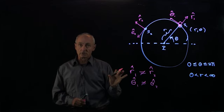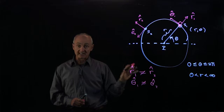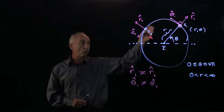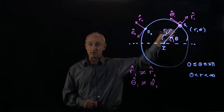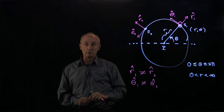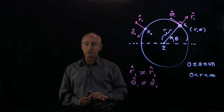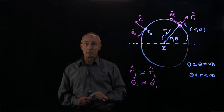So unlike Cartesian coordinates, in which every single point has the same unit vectors, in polar coordinates the unit vectors depend on where you are in space. And that will make our analysis in polar coordinates a little bit more complicated.